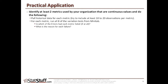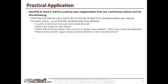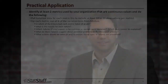Once you run it, ask yourself: which of the eight tests did each metric fail, if any? What is the reason for each failure? Which failures appear to be common or special cause variation? What do those failures suggest about potential problems in the measured process, and what action should be taken to prevent those types of failures?